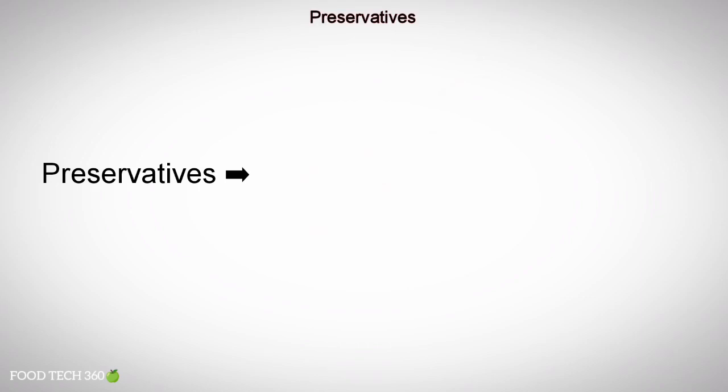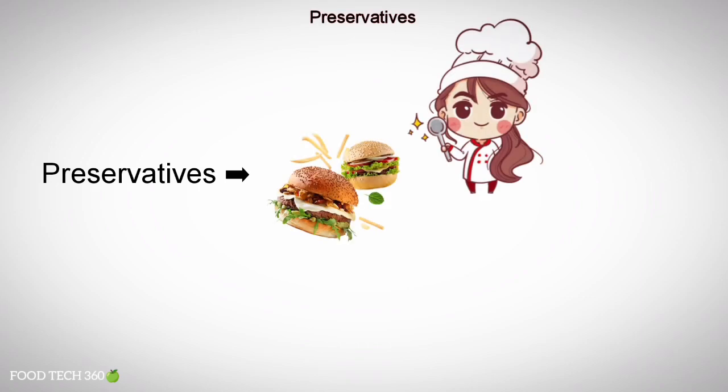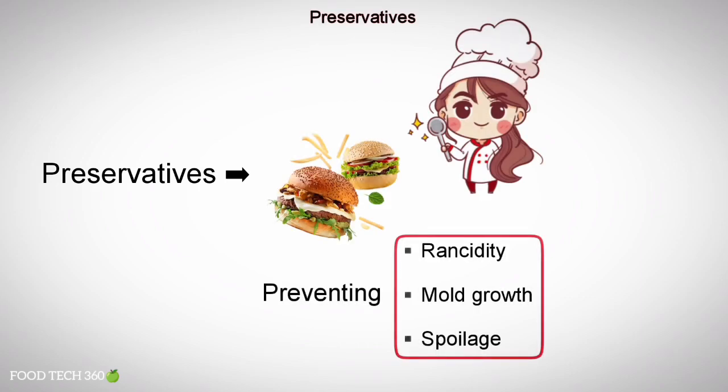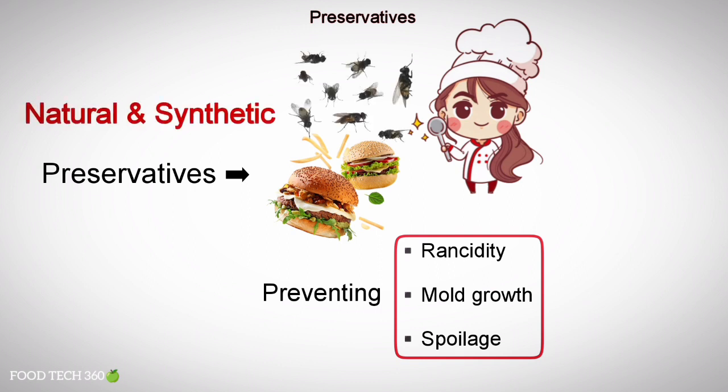Preservatives are added in foods to prevent rancidity, mold growth, and spoilage. There are natural and synthetic preservatives which are widely used for preventing foods from getting spoiled.